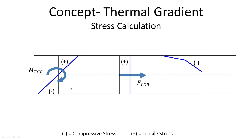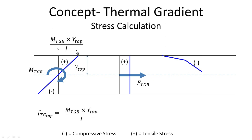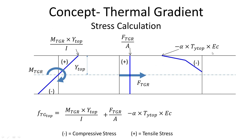The net thermal gradient stress will be the sum of these three stress profiles. So if you want to determine the thermal gradient stress at the top of the beam, it will be the stress due to the reactive thermal gradient moment — obtained by the flexural formula — plus the stress due to the reactive thermal gradient force, plus the stress due to the active thermal gradient. Adding these three stress values at the top gives us the equation for the thermal gradient stress at the top.